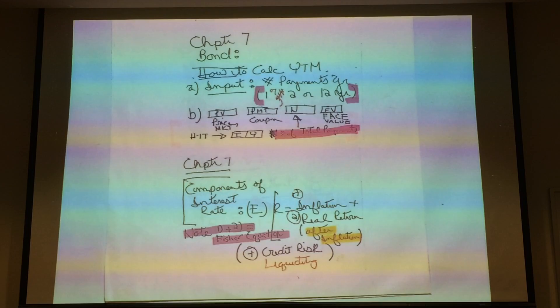Chapter 7, also, have to understand the components of interest rate risk, what you're getting compensated for. The parts of that are inflation, the real rate of return, the credit risk of a bond, and liquidity of a bond.